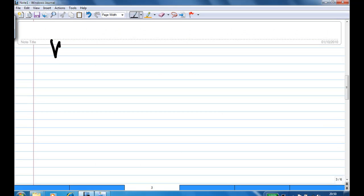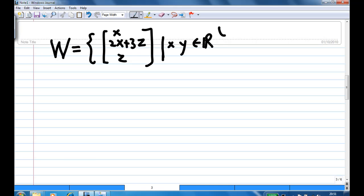Now we are given W consists of the vector of the form x, 2x plus 3z, and z.